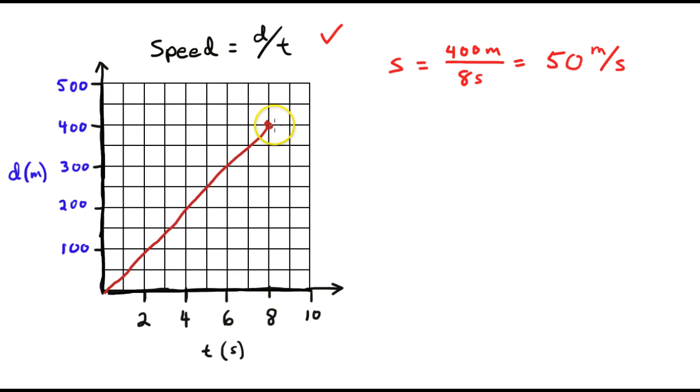And you can see that this is supposed to be a straight line, so it's going at a constant speed. Now if I have a different example here, where we have this other object that is going from 0 only to 100 meters, and it does it in 5 seconds.